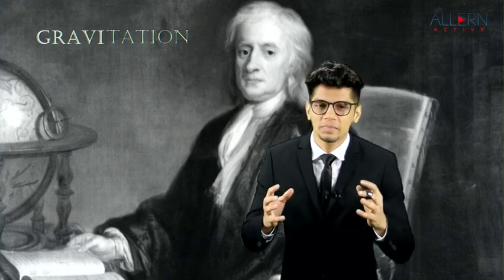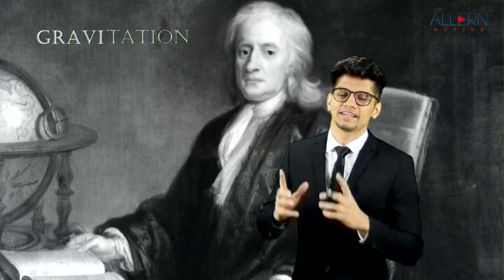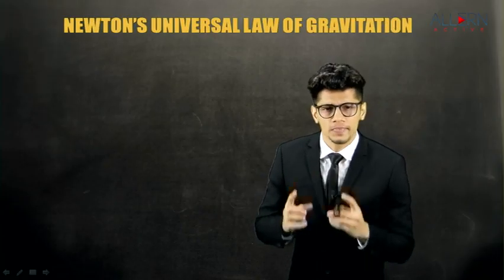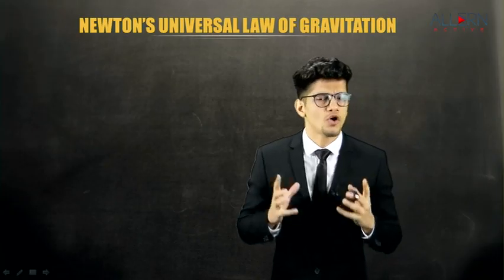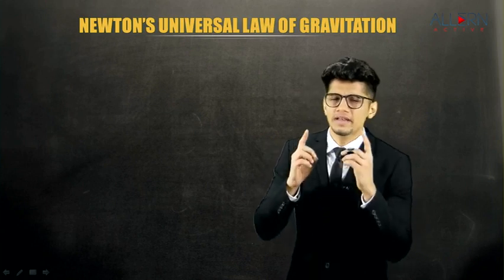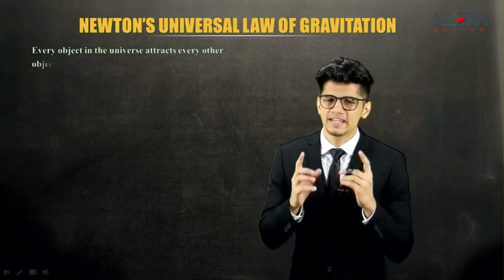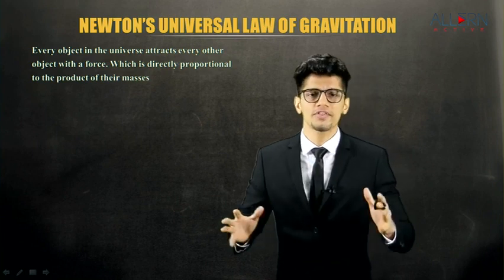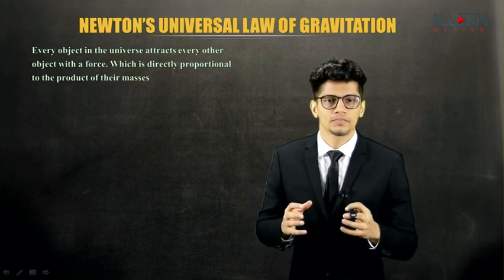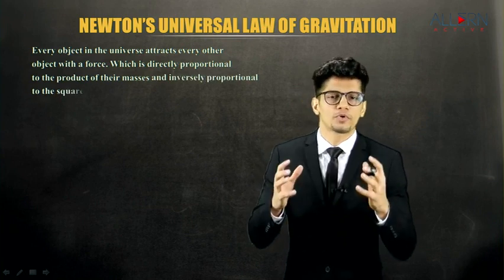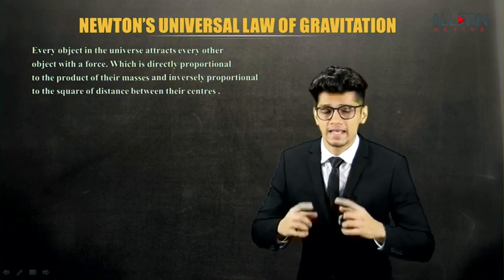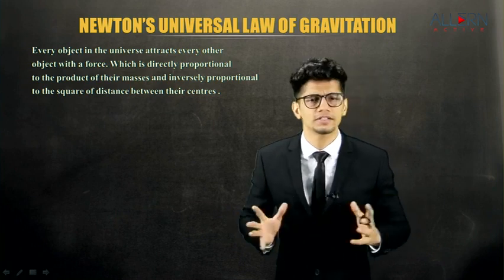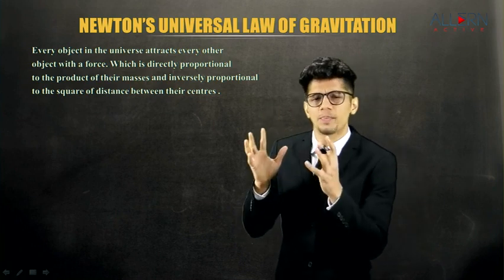My name is Josefa, and in this chapter on gravitation, we'll start by understanding Newton's universal law of gravitation. The statement says: every object in the universe attracts every other object with a force which is directly proportional to the product of their masses and inversely proportional to the square of the distance between their centers.